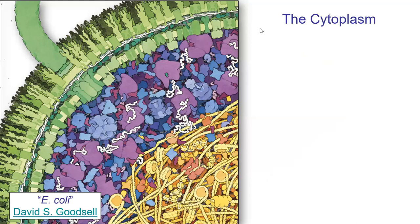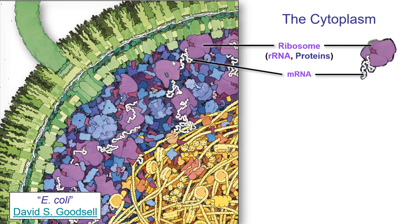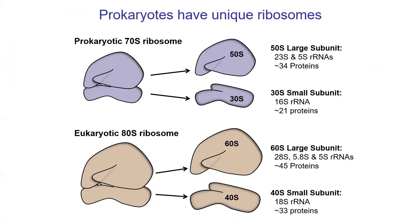Starting with the cytoplasm. This image is by artist and biochemist David Goodsell, who makes really nice accurate artwork of biochemical processes. He's showing E. coli here, and you can see the cytoplasm is just full of all sorts of things. Some of these are ribosomes and messenger RNA — in brackets I've put what these things are made of in terms of macromolecules. Ribosomes are RNA and proteins, and we'll talk about those in a few minutes. There's also transfer RNA in there.